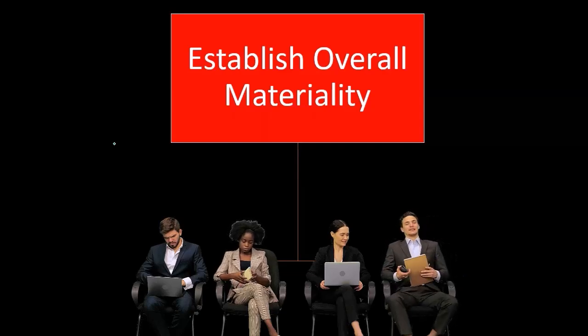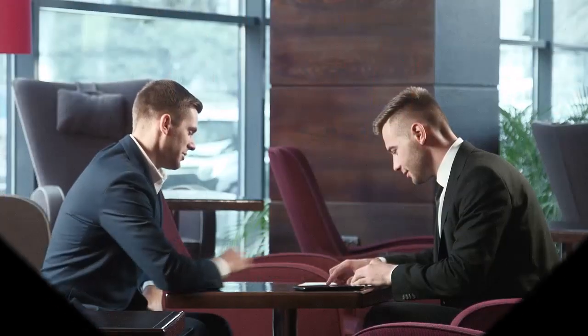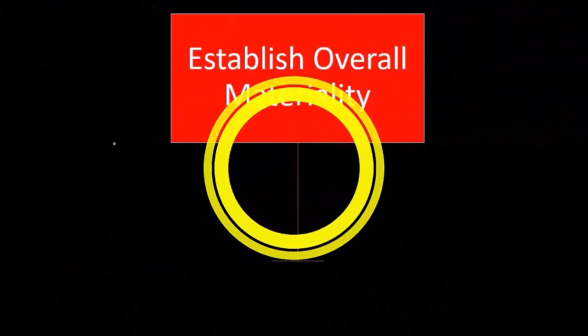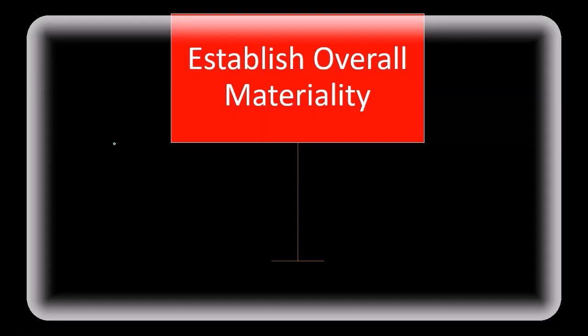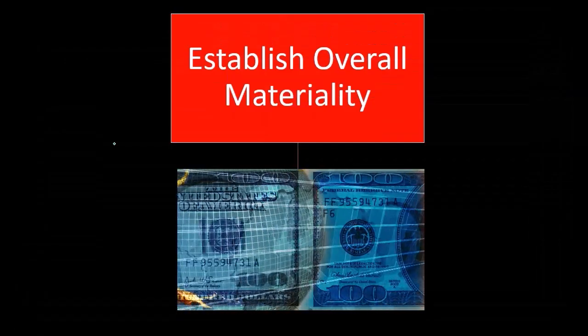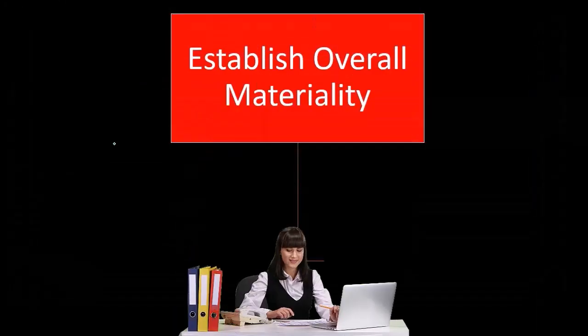If a misstatement of a certain size is omitted, we need to know this in the planning stage and actually work it into our planning process. When we think about risk and how much testing we're going to have to do, we have to think about what is an acceptable amount of overall materiality — misstatement in essence — which seems a little counterproductive. You would think that we would try to be eliminating all problems.